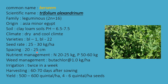Nutrient management: nitrogen 20 to 25 kg and phosphorus 50 to 60 kg per hectare. Weed management uses butachlor at 1 kg per hectare. Irrigation: twice a week. Harvesting is 60 to 70 days after sowing. Yield ranges from 500 to 600 quintals per hectare, with 4 to 6 quintals per hectare of seeds.